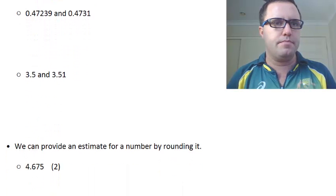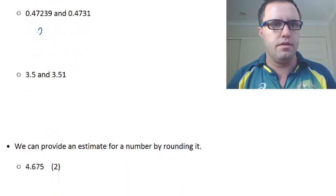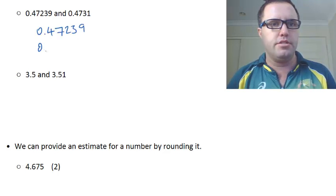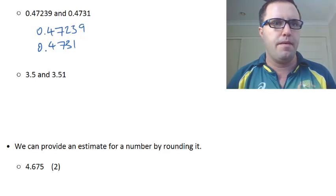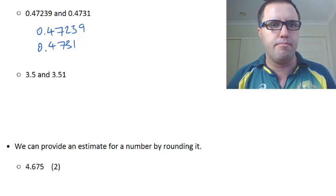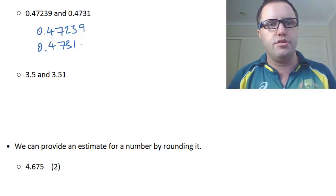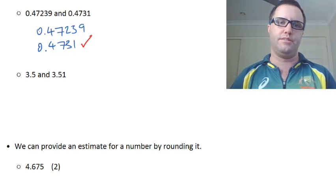This next one here, 0.47239, 0.4731. Again, those are the same, 0 and 0. Next one down, 4 and 4 are the same, 7 and 7 are the same, 2 and 3. Boom. 3 is larger than 2, so that means this one is the largest.